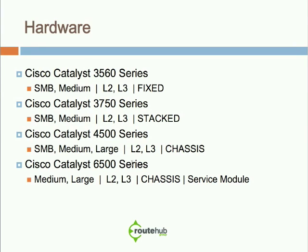The 6500 series is more aimed at medium and large businesses. It also has layer 2, layer 3, and other layers like layer 4. It is also a chassis but provides service modules where you can install things like an SSL VPN module, a voice module, or a wireless controller module inside. There is a wide variety of service modules that give us a consolidated network infrastructure within Cisco's flagship product, which is their 6500 series.